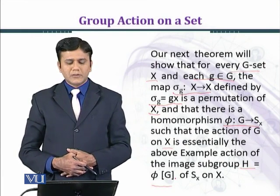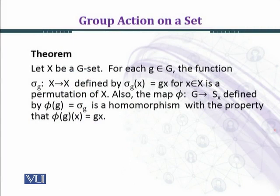We state the theorem. Let X be a G set. For each G belonging to capital G, G is a group. The function sigma G from X to X defined by sigma G X equal to GX for X belonging to X is a permutation of X. Also, the map phi from G to S_X defined by phi G equal to sigma G is a homomorphism with the property phi G X equal to GX.